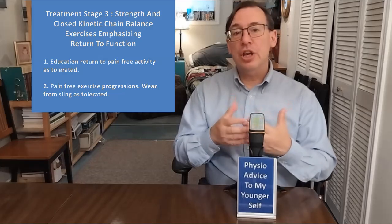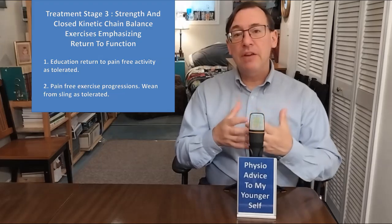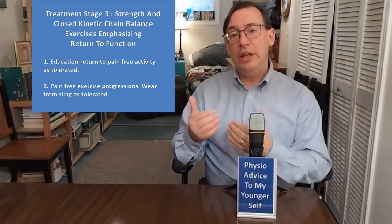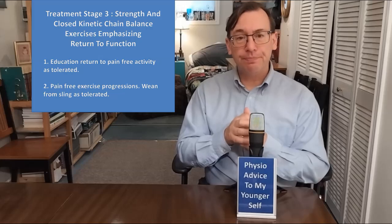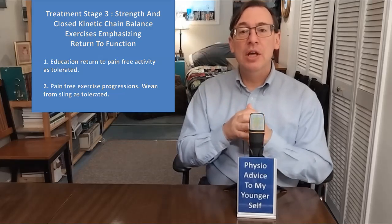Stage three is the strength, closed kinetic chain stability balance type exercises, emphasizing a return to function. Number one, education on return to pain-free activity as tolerated. Number two, pain-free exercise progressions, weaning from the sling as tolerated. This is the other pathway I was promising to help with shoulder strengthening. The scapular activation pathway, start with scapular retraction. Progress to scapular retraction with the resistance band. And eventually get to band pull apart exercise.